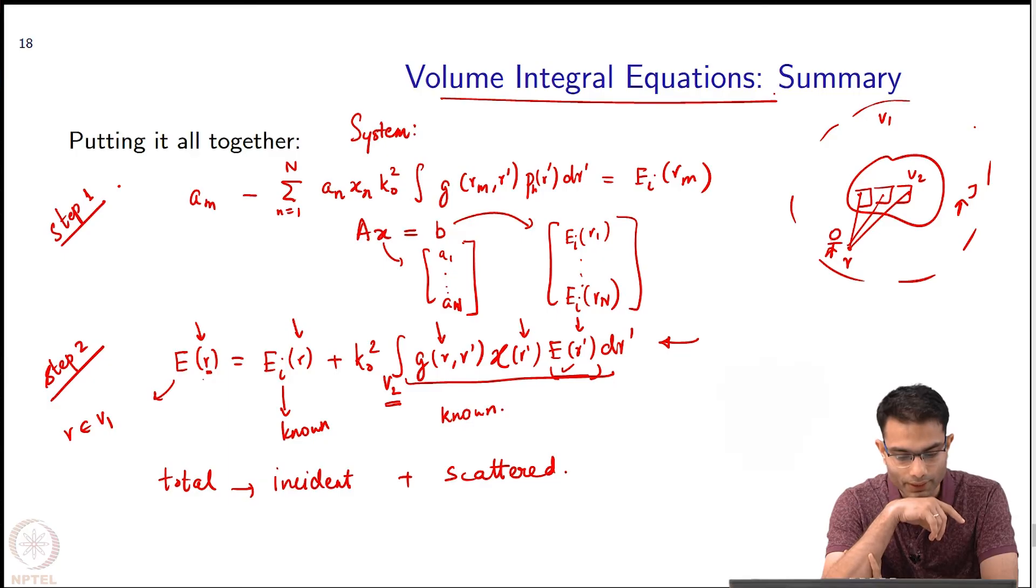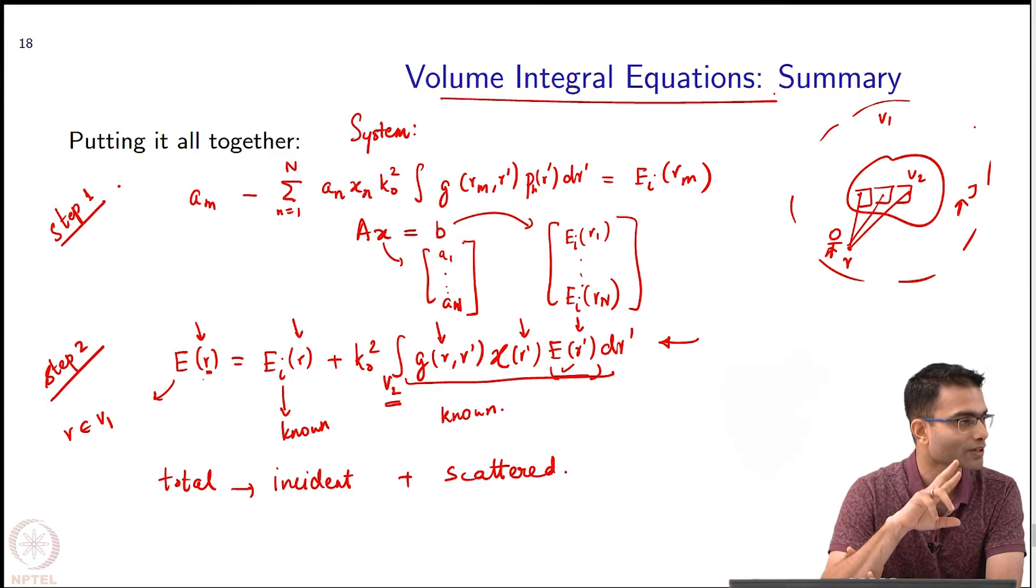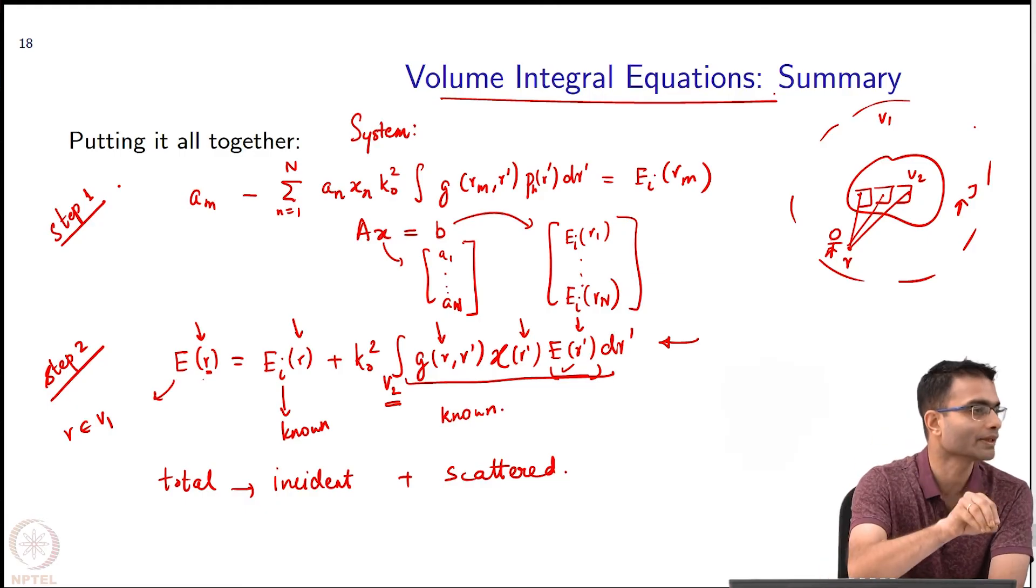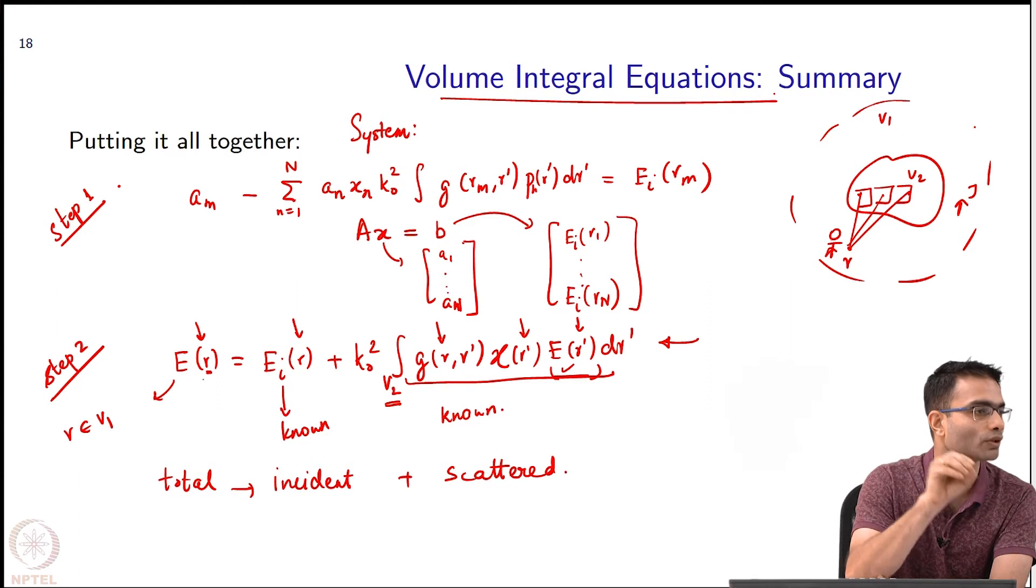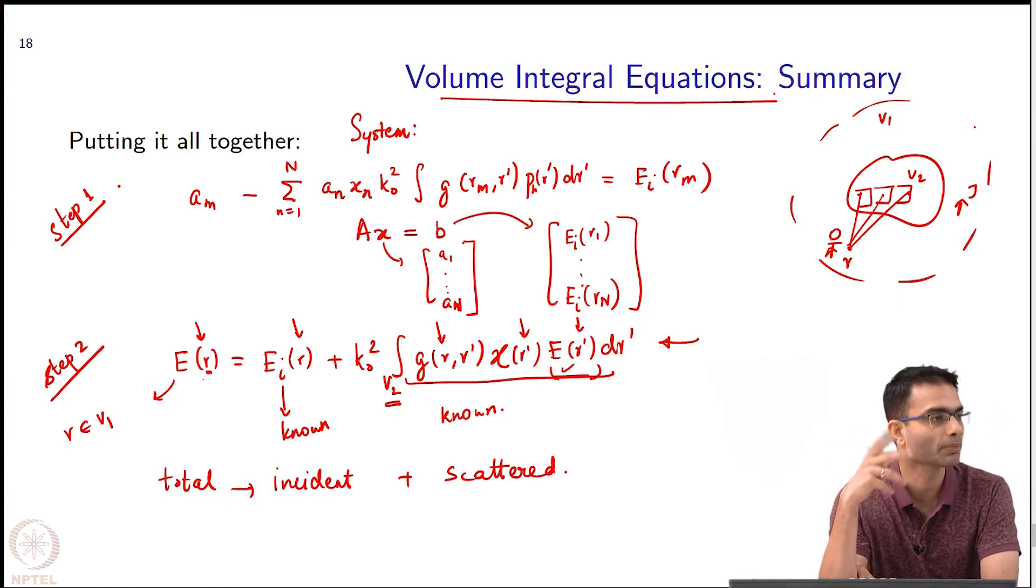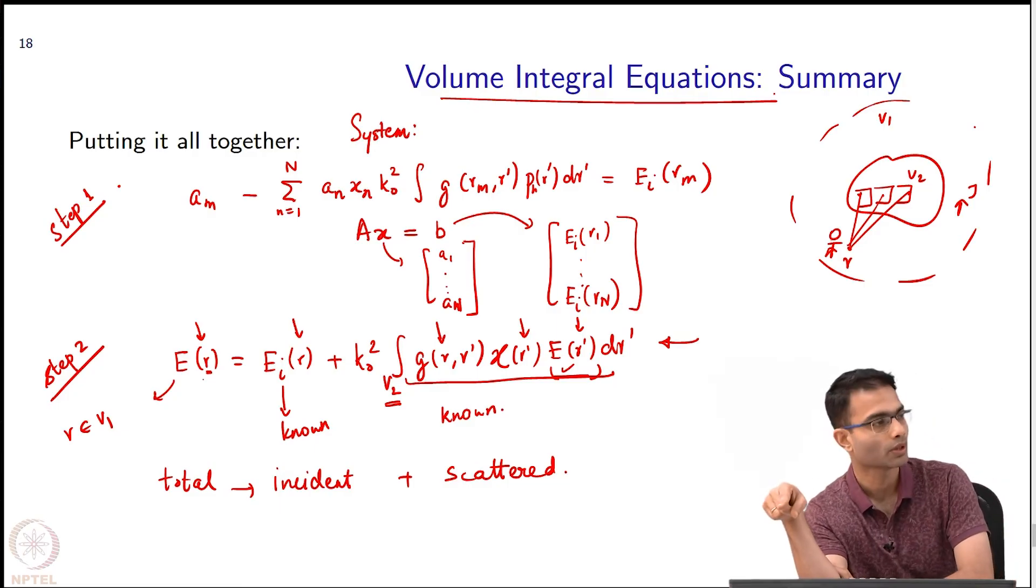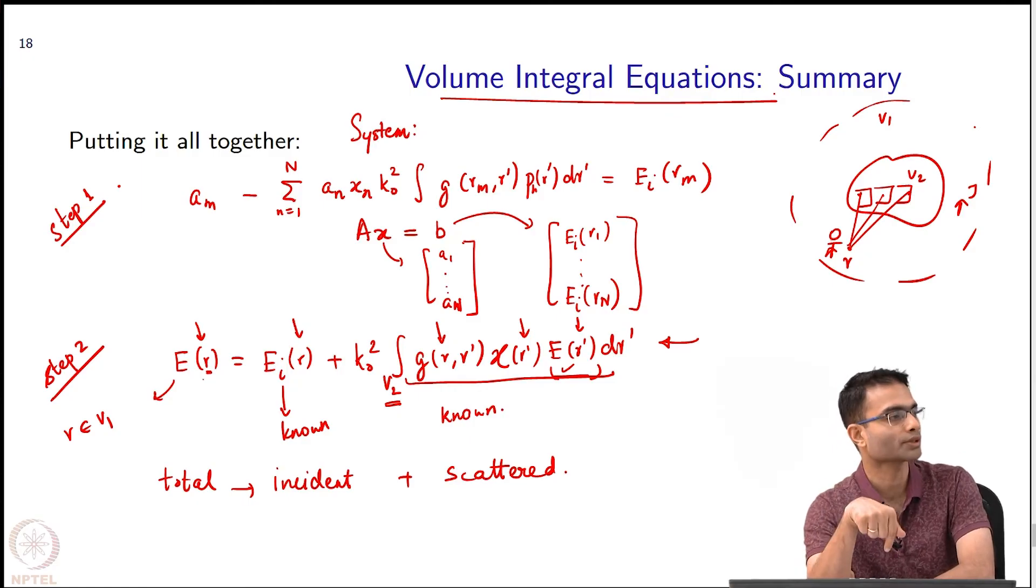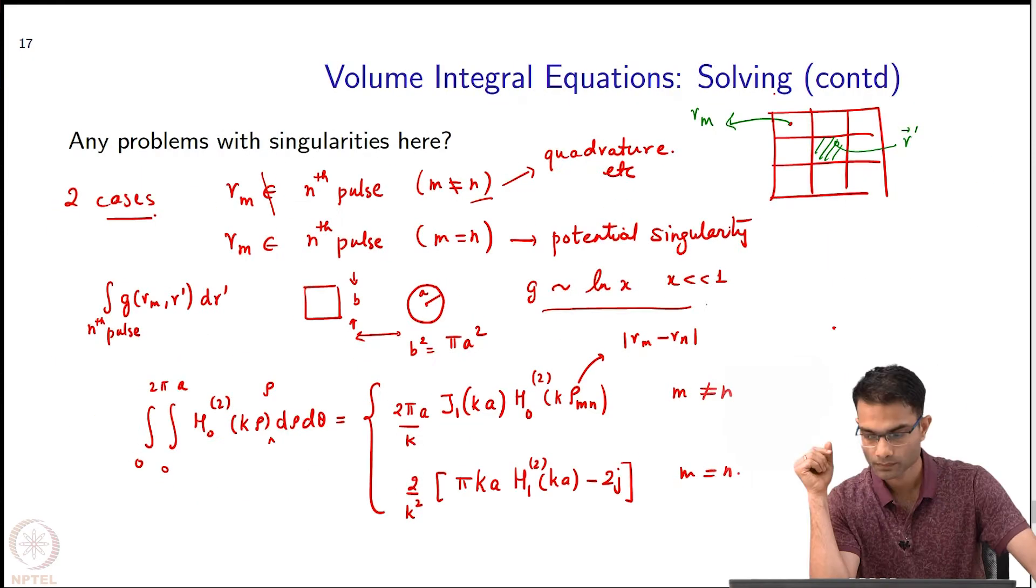The incident field is going to be—so, the equations are the same, step 1 and step 2, the equations are the same. Wherever you put r, you calculate E_i(r), whether it is in V_1 or V_2, it is a numerical value, right? So it does not matter. It will be different in step 1 and step 2 because in step 1 r is belonging to V_2, so you will be finding out E_i inside V_2. In step 2 you will be finding out E_i at the location of the observer.